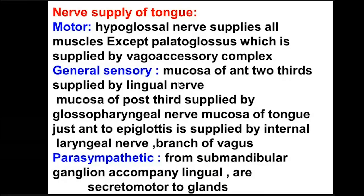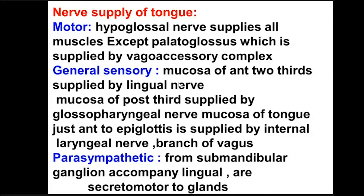Regarding the nerve supply of the tongue: since the tongue is formed of muscles, it needs motor supply; being covered with mucous membrane, it needs sensory supply for touch, pain, and temperature; and it needs special sensory supply for taste through the taste buds. Additionally, the mucous-secreting glands need autonomic supply. The motor supply to all muscles of the tongue — both extrinsic and intrinsic — is the hypoglossal nerve, which is the sole motor supply, except for the palatoglossus, which is a muscle of the soft palate originally and is supplied by the vagal-accessory complex.